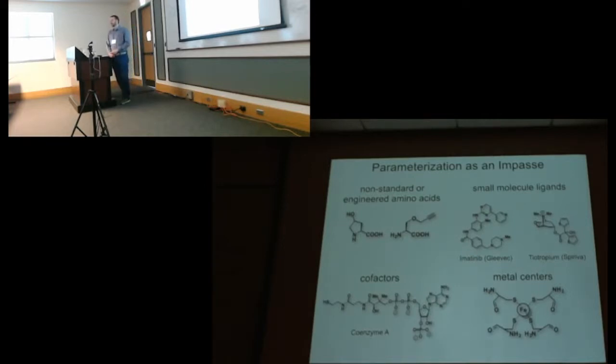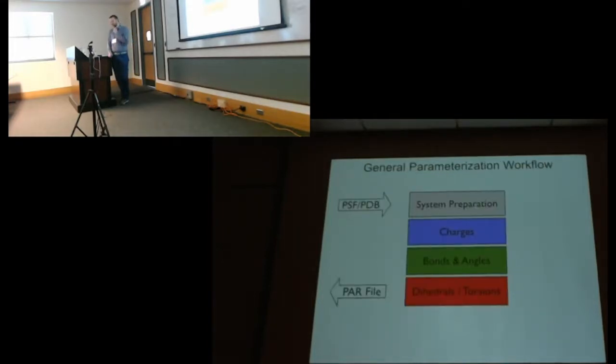But it doesn't take a lot of free thinking to realize that there are going to be some limitations or places in biology or chemistry where this doesn't apply. And parameterization, as I found out, is really an impasse. It's a show stopper. If you don't have parameters, you can't run your simulation. Examples where this comes up: non-standard or engineered amino acids, small molecule ligands, which is where I come into play, and complicated cofactors or metal centers.